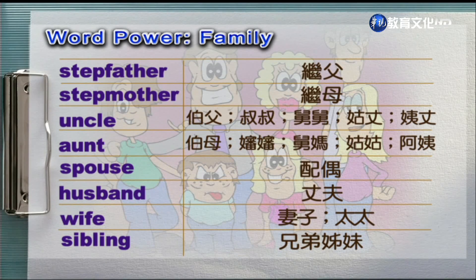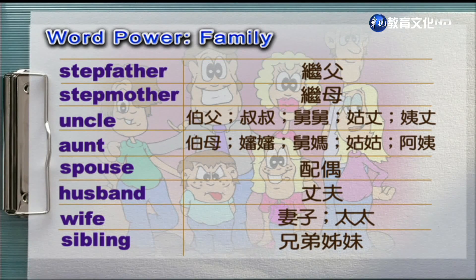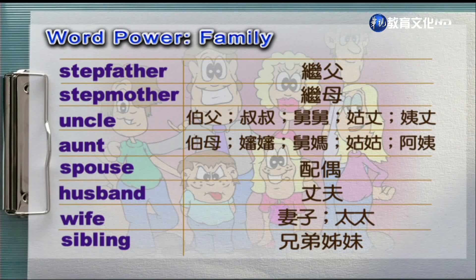接下来我们看一下下一张字卡。Stepfather, stepmother, uncle, aunt, spouse, husband, wife, sibling. 好，同学可以看到继父继母的话，你在前面都要加上step，S-T-E-P。好，再来呢配偶的地方就是spouse，因为配偶可能是比方说男生的配偶是wife，女生配偶的话就是husband，这样子一个用法。最后一个字sibling就是兄弟姐妹的意思。